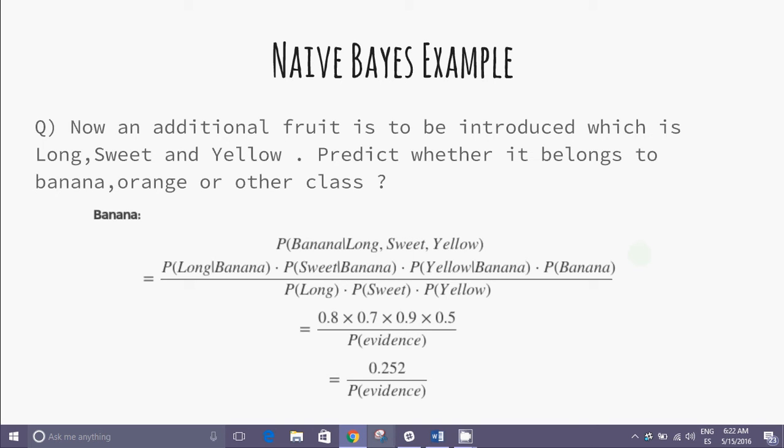First, let us discuss about the banana class. The probability of banana conditioned on long, sweet, yellow is P(long|banana) × P(sweet|banana) × P(yellow|banana) × P(banana) / [P(long) × P(sweet) × P(yellow)], which evaluates to 0.252.